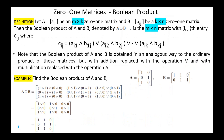Next, the Boolean product of 0-1 matrices. Let matrix A equals Aij be an M by K 0-1 matrix, and matrix B equals Bij be a K by N 0-1 matrix. The Boolean product of A and B, denoted A Boolean-product B, is the M by N matrix with entry Cij, where Cij equals (Ai1 AND B1j) OR (Ai2 AND B2j) OR ... OR (AiK AND BKj). It is computed like ordinary matrix multiplication but with addition replaced by OR and multiplication replaced by AND.